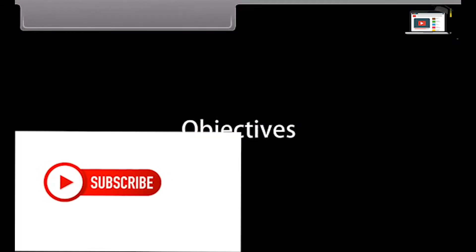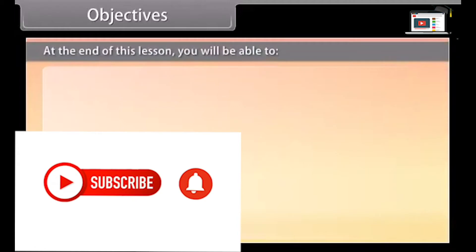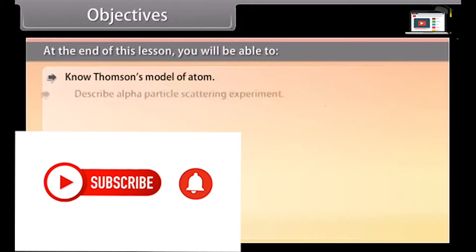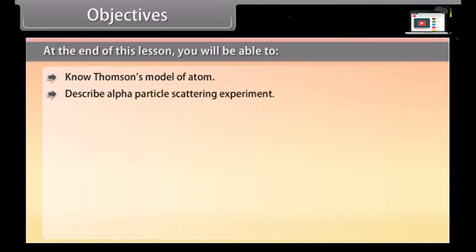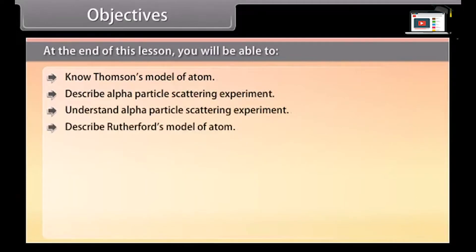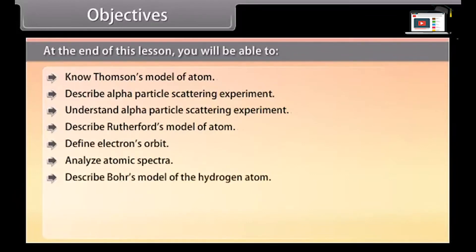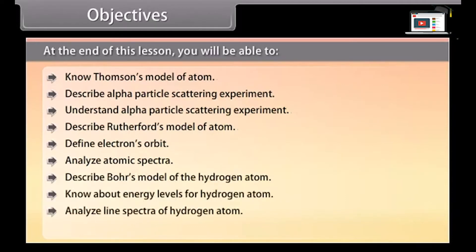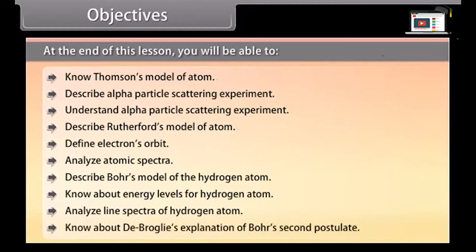Objectives: At the end of this lesson you'll be able to know Thomson's model of atom, describe and understand the alpha particle scattering experiment, describe Rutherford's model of atom, define electron orbits, analyze atomic spectra, describe Bohr's model of the hydrogen atom, know about energy levels of hydrogen atom, analyze line spectra of hydrogen atom, and know about de Broglie's explanation of Bohr's second postulate.